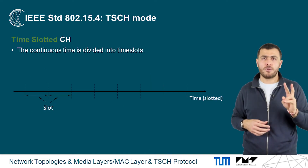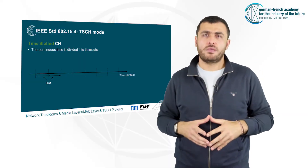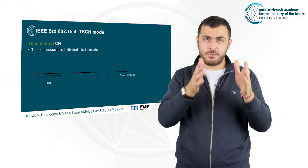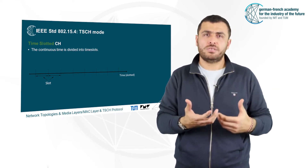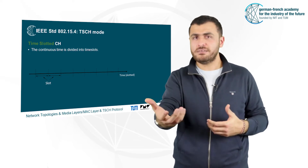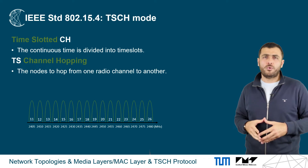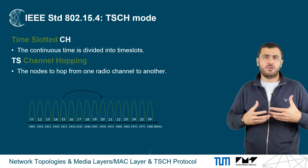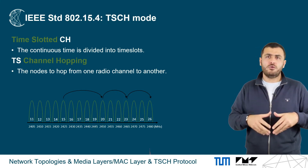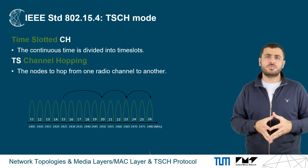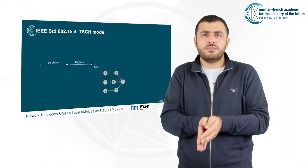There are two main principles in TSCH. The first is the time-slotted concept, where continuous time is divided into time slots and a given node is assigned a time slot at which it can send or receive a frame. The second is the channel hopping mechanism, where the use of multiple radio channels allows nodes to hop from one radio channel to another. Moreover, it allows two distinct sources to send a frame at the same time to two different destinations.